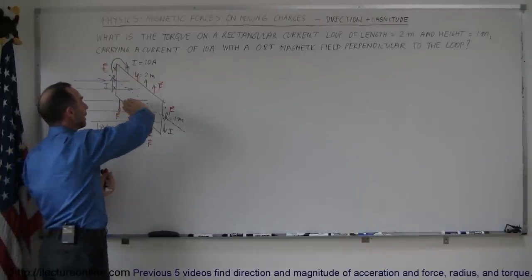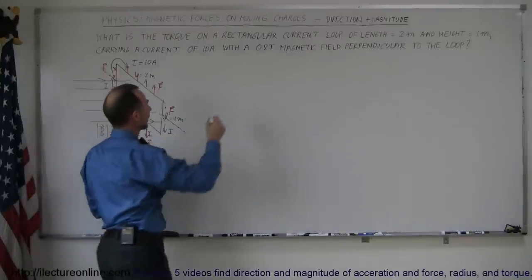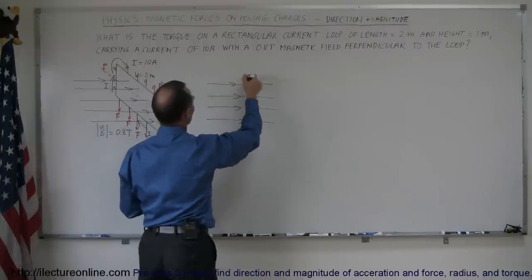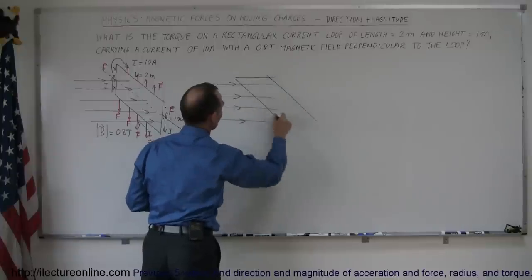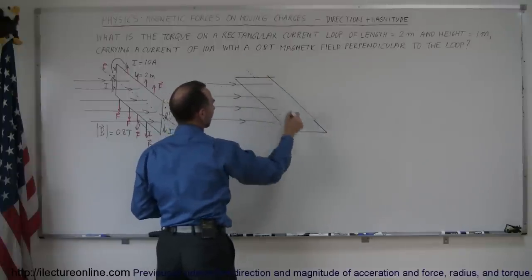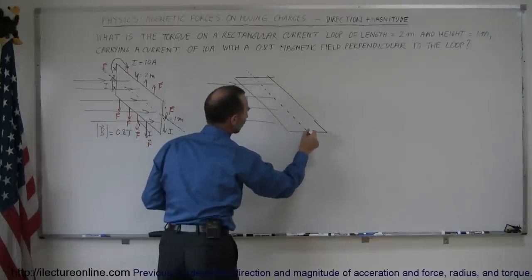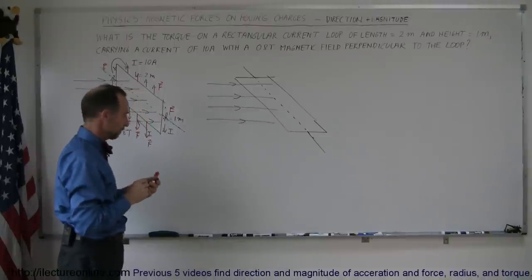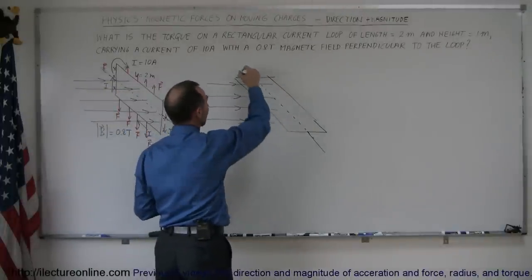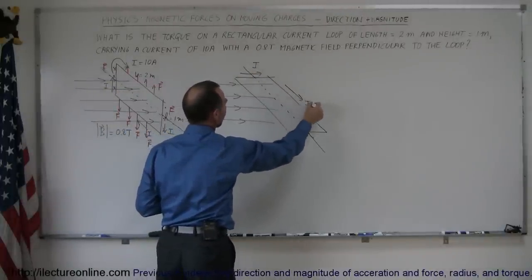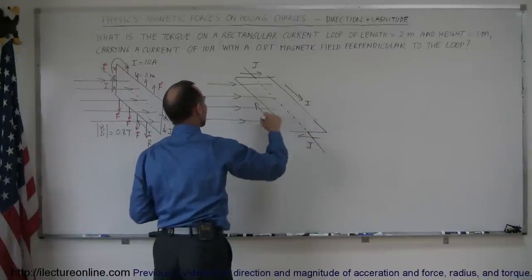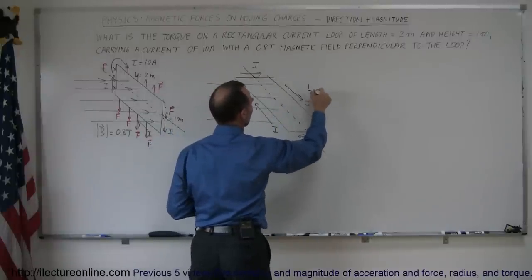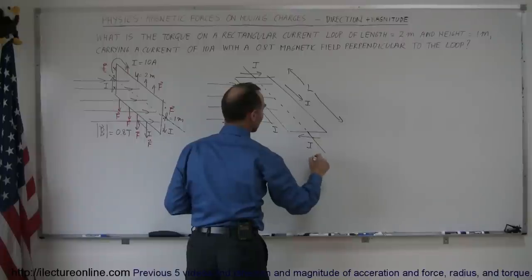What if we take this and lay the loop flat? With the same magnetic field going from left to right, we put the loop flat. The rectangular loop has an axis through it and is free to rotate about this central axis. I still have a current going around the loop in a clockwise direction: I going this way, I in this direction, current going this direction, and current going in this direction. Here's still our B field. This is the length from there to there, and from there to there is the height of the loop.